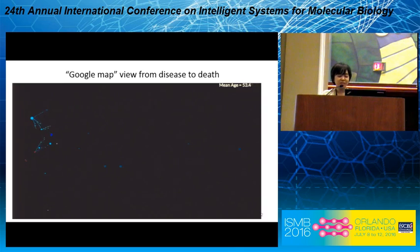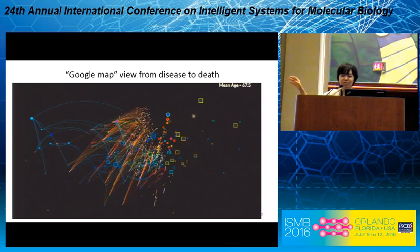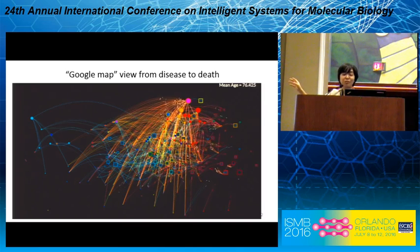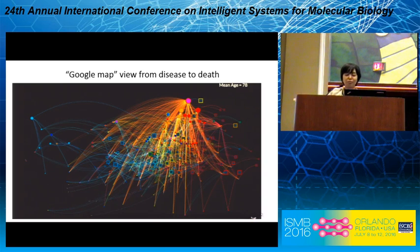As you can see, the circles are diseases and squares are deaths. There is a real traffic of patients from disease to disease and finally to death. Blue colored edges represent the real traffic of young patients, and red colored edges represent the death-heading traffic of elder patients. We can visualize all of them within 30 seconds — it is like a Google Maps from disease to death in US hospitals.